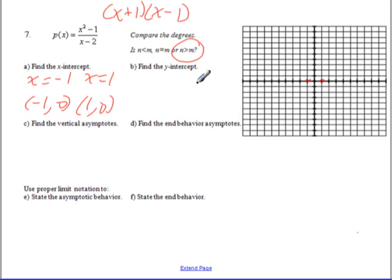Y intercepts, of course, are when X equals 0. So if you plug 0 in for your Xs, you get negative 1 over negative 2, which is positive 1 half. So that is your Y intercept right here at positive 1 half. Try to get that as accurate as I can.